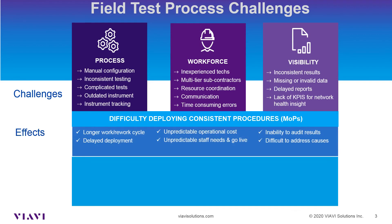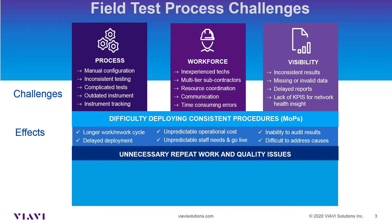The effects of this are that it's difficult to deploy consistent procedures across your team, which can lead to longer deployment cycles and unpredictable cost. You may see your schedule slip away and not know when you might be able to go live. There's an inability to audit results, and it can be difficult to address the root cause of issues, causing unnecessary repeat work and quality issues. These compound as we go through the lifecycle — if we build a lot of faults in the construction phase, they only get exacerbated as more people handle the network, activate service, and things compound along the way.